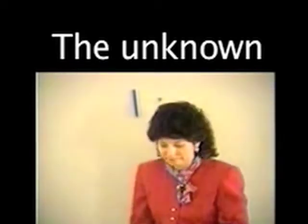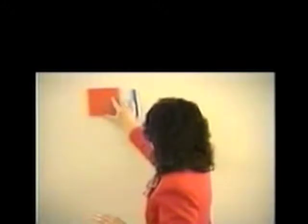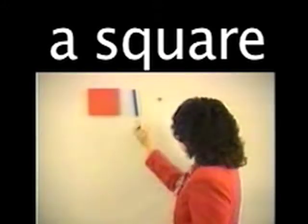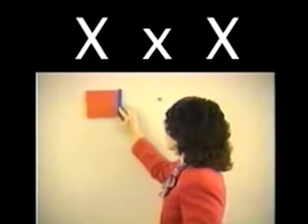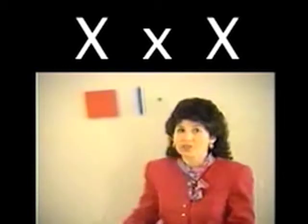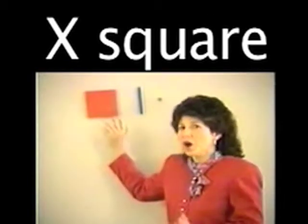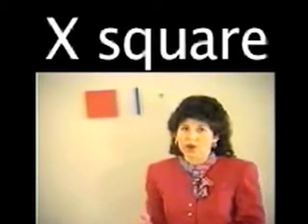The unknown. Here is our X. And this, well, it's obviously a square. And it's X by X. We call it X square.